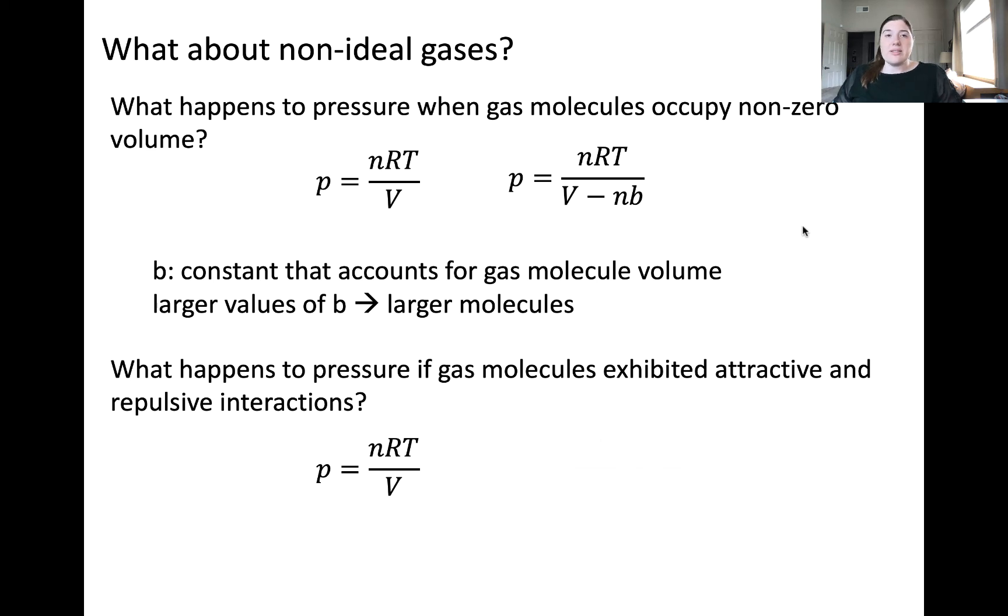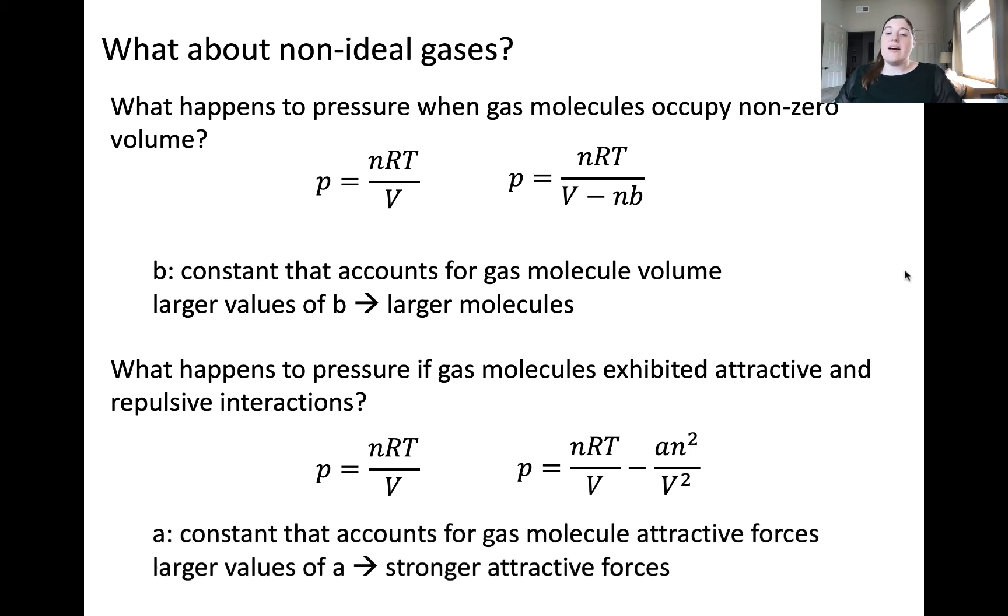It follows that a mathematical expression for the pressure would have a second term to account for the attractive forces, which is shown here as an squared over v squared. Here, a is a constant that accounts for gas molecule attractive forces. The larger the value of a, the stronger the attractive forces in that sample of gas.